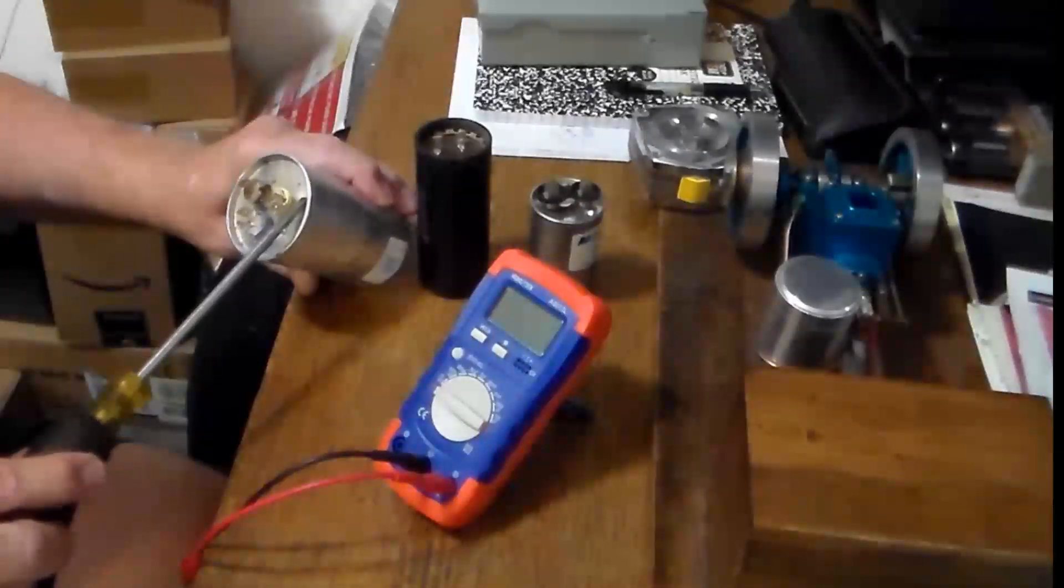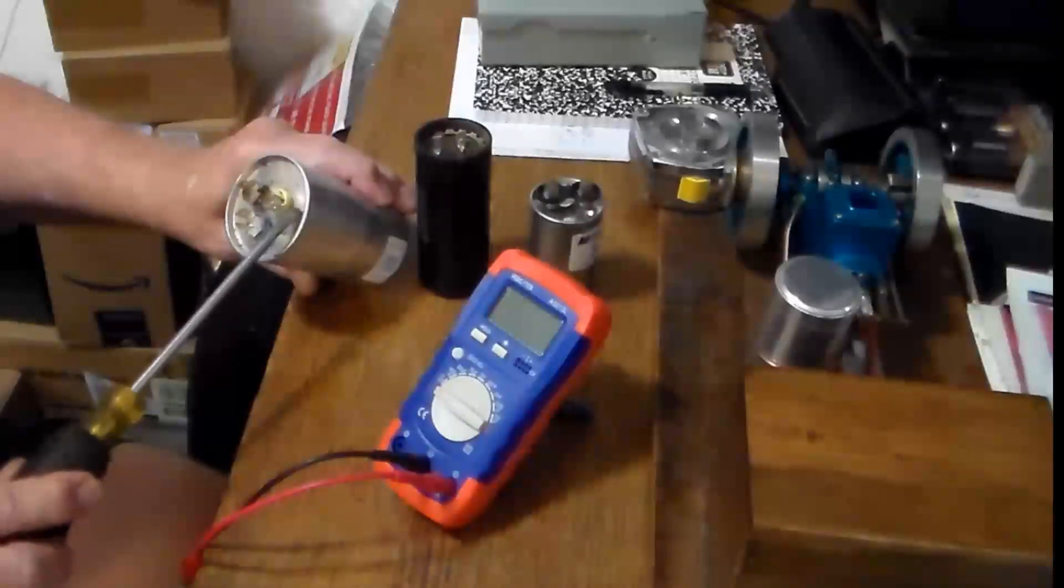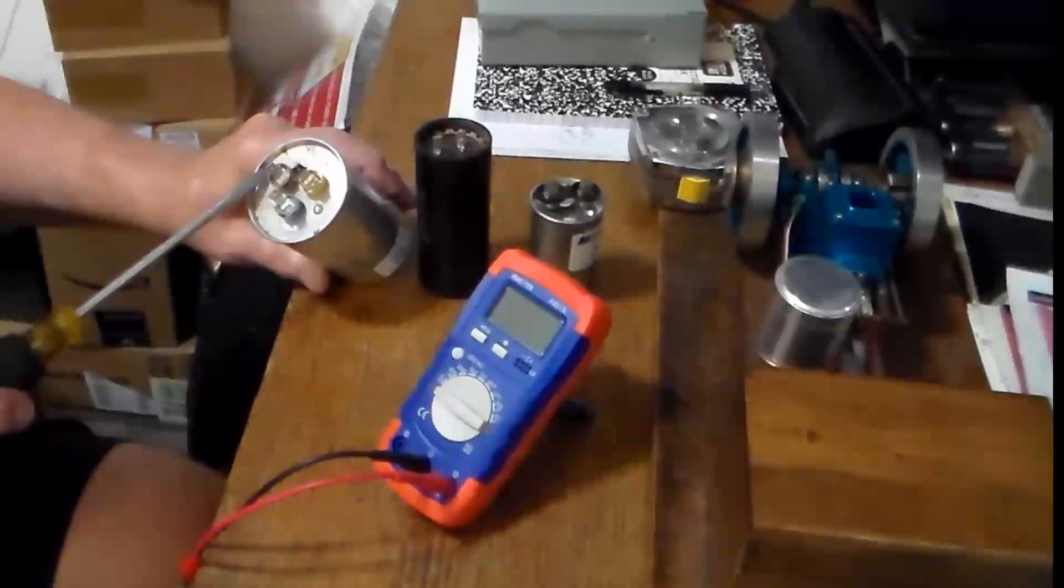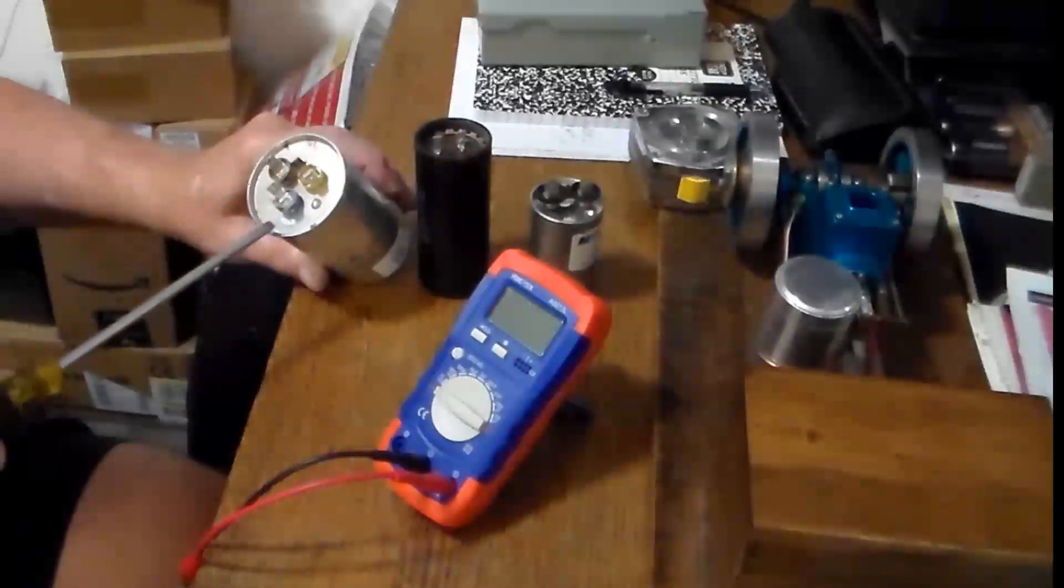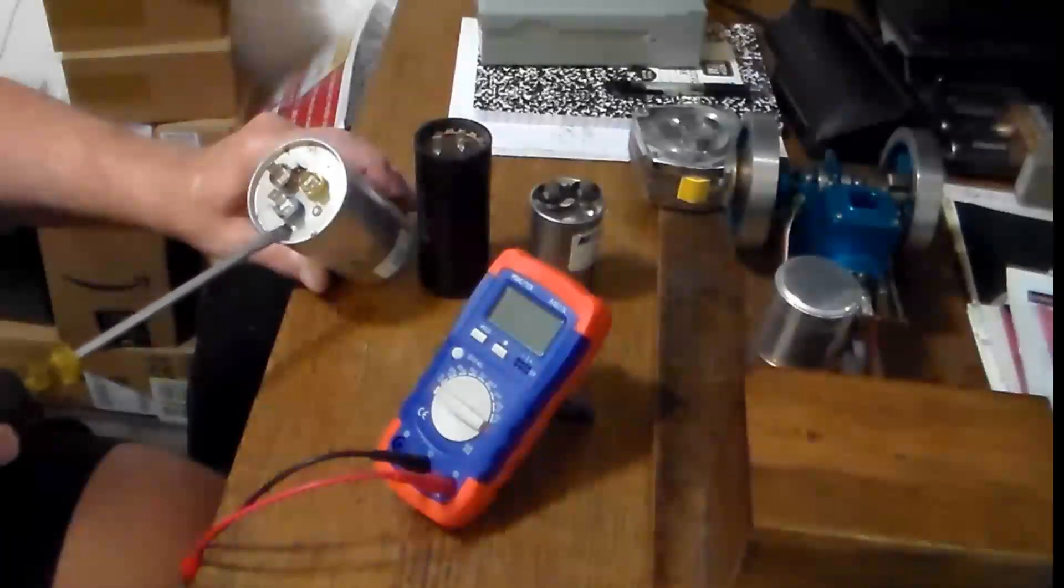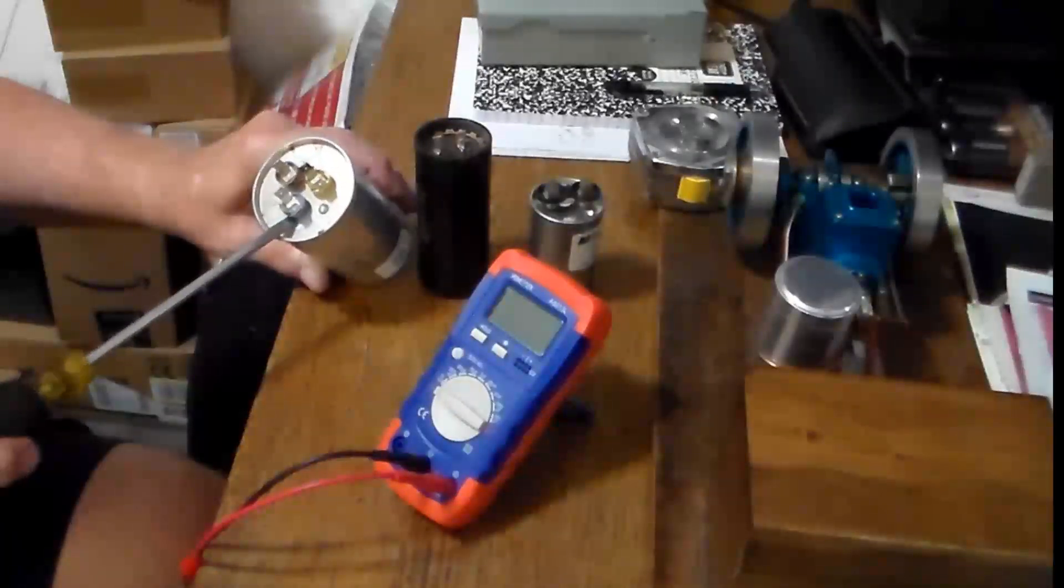On this, you're going to see a C which is for common, and that happens to be yellow. Then you have a terminal here that says fan, that's brown. And here it says herm—that's the equivalent of saying compressor—and that is blue.